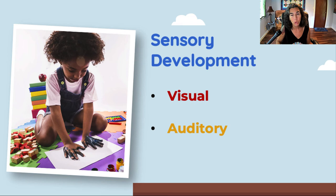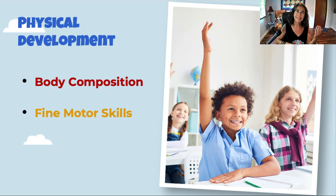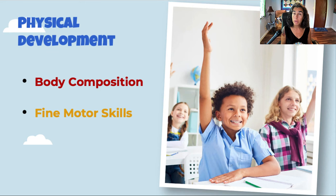Let's look at physical development. There are very dramatic changes during middle childhood — the six-year-old versus the twelve-year-old are quite different. Children grow approximately two to three inches per year between ages six and eleven. There's an increase in skeletal and muscle mass, and muscle strength increases quite a bit.